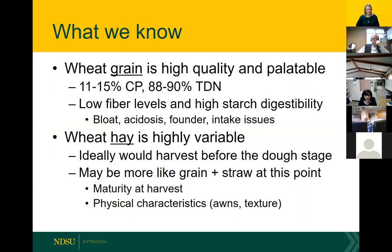We put up a lot of wheat hay in North Dakota especially during drought years. Ideally we'd know ahead of time and harvest before the dough stage to get the best quality. At this point we're probably dealing with more of a grain-plus-straw mixture. Everything is fairly mature, and there are physical characteristics such as awns and the hard texture of the straw that can impact palatability and the animals' ability to physically eat the standing grain. So it's going to be extremely variable in terms of what cattle eat and what quality is available to them.